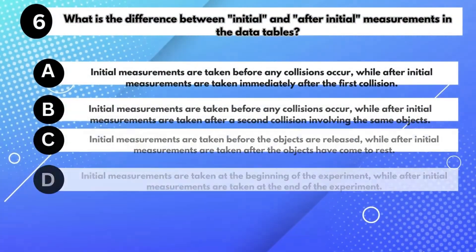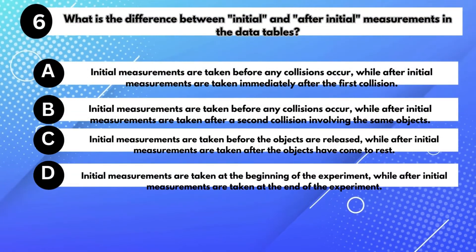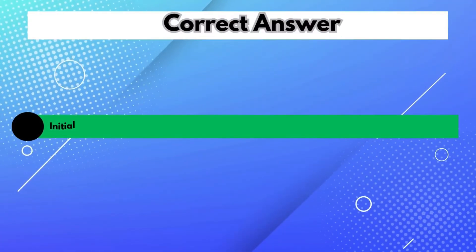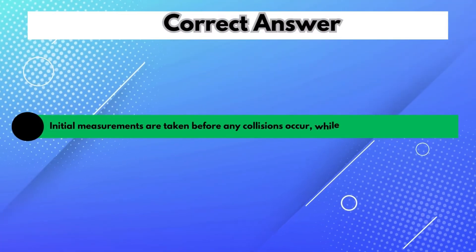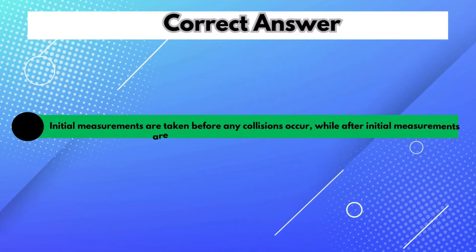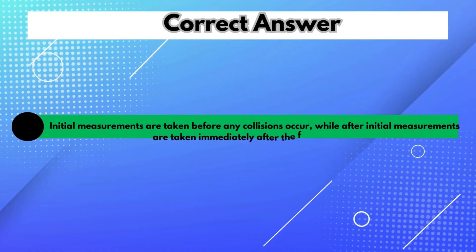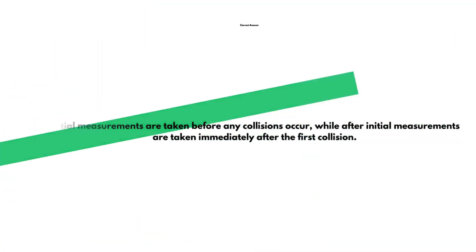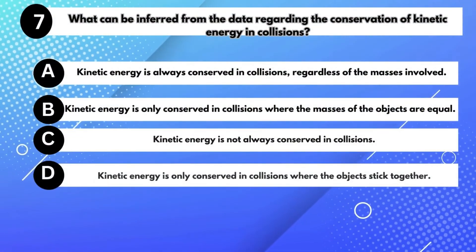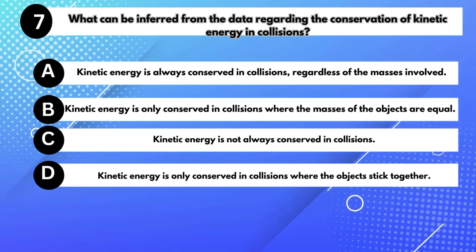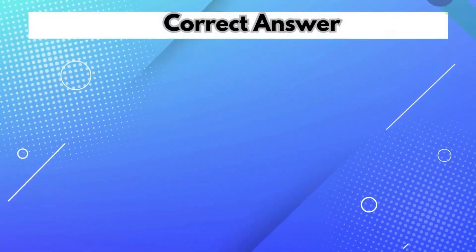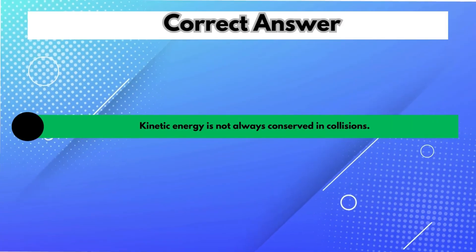What is the difference between initial and after-initial measurements in the data tables? Answer A: Initial measurements are taken before any collisions occur, while after-initial measurements are taken immediately after the first collision. What can be inferred from the data regarding the conservation of kinetic energy in collisions? Answer C: Kinetic energy is not always conserved in collisions.